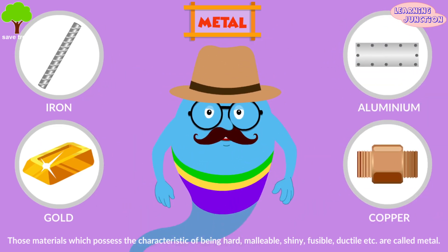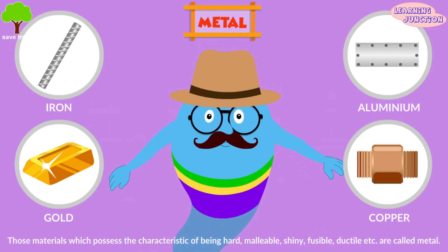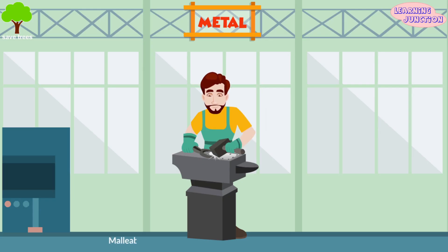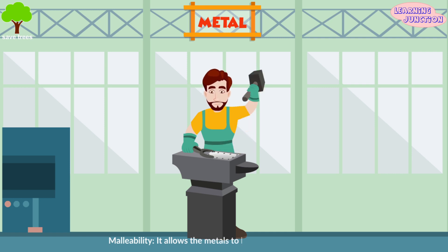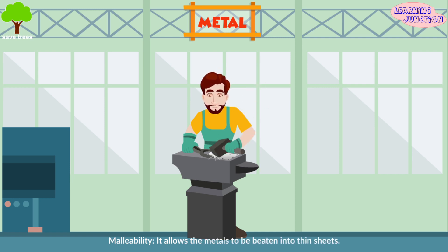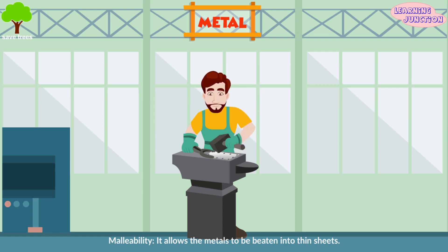Let's see the physical properties of metals. Come with me. Malleability — it allows the metals to be beaten into thin sheets. Due to the presence of this property, the shape of aluminium wire and iron nail can be changed on beating.